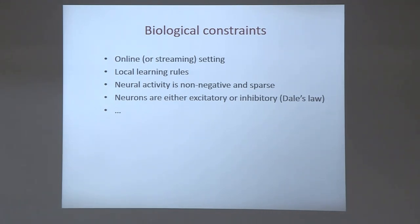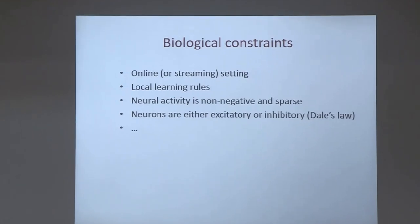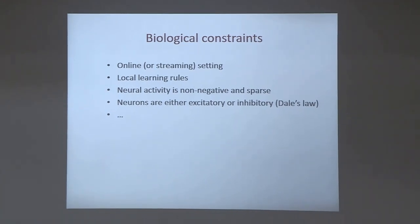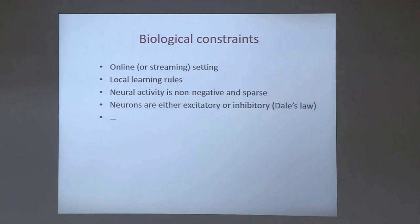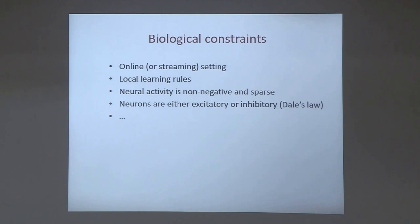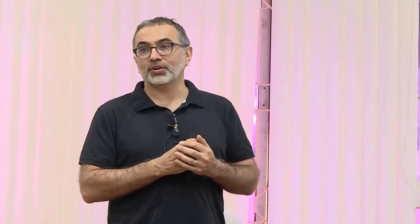For biologists in the audience, this may be natural, even though some words may look a little unfamiliar. But for computer scientists, it's important to have this list in mind. Biological neural networks operate in the online setting. Learning rules have to be local in physical space. Neural activity is non-negative and sparse. Neurons are subdivided into excitatory and inhibitory. These constraints are crucial to respect if you want to build a model of brain computation. For computer scientists, some constraints may seem like roadblocks because they negate some currently successful algorithms.